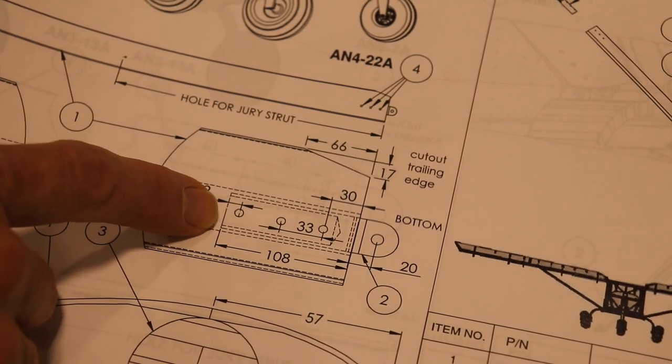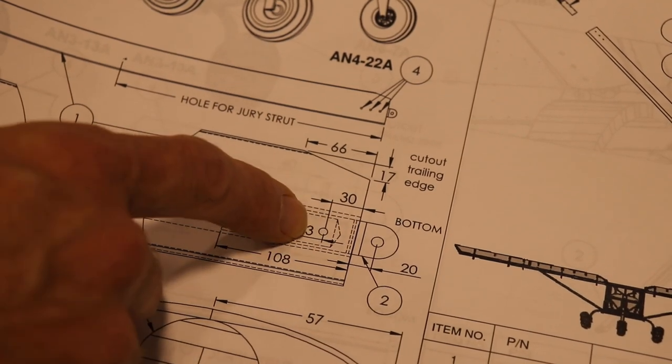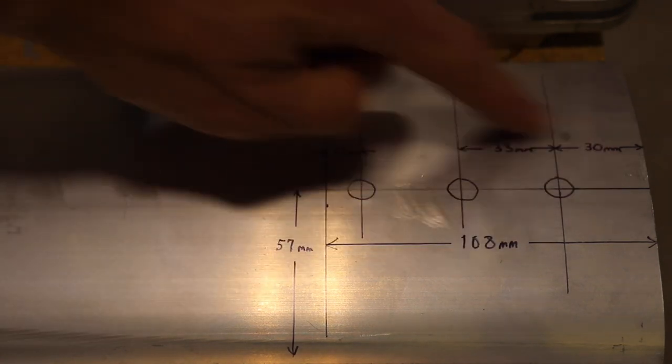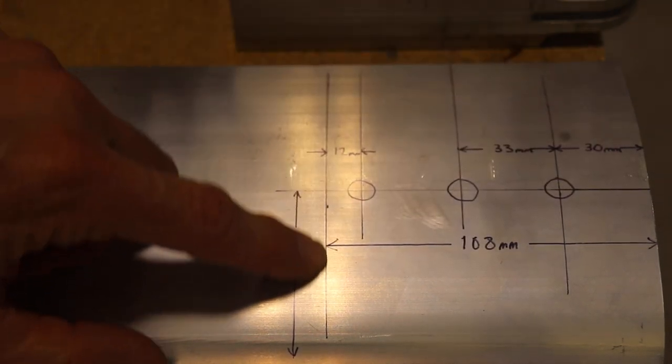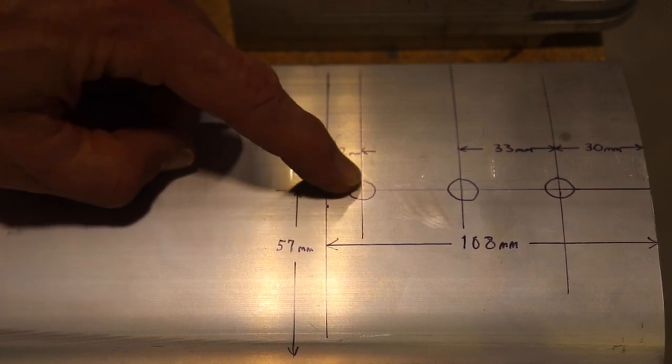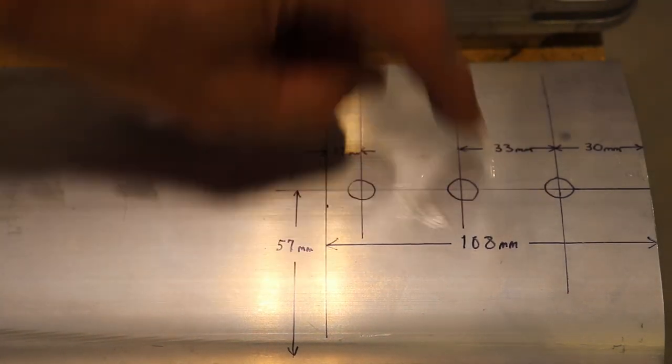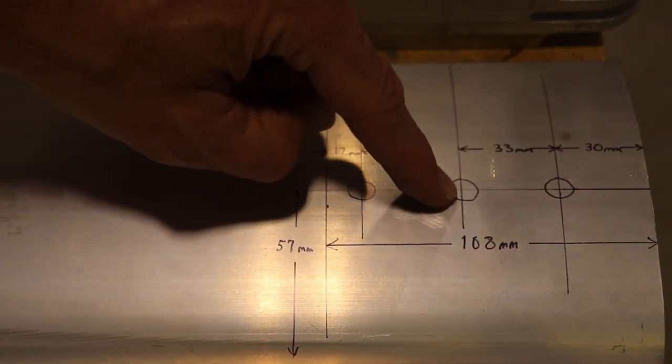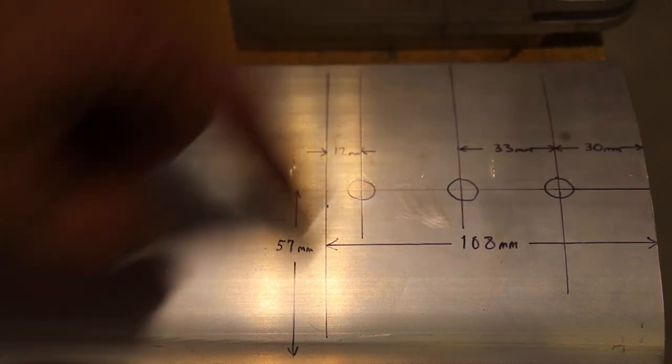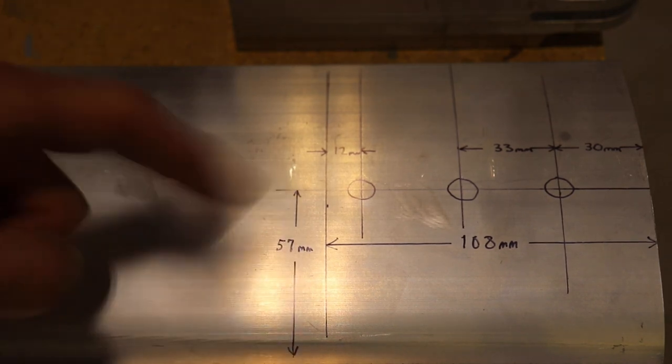This hole should be 12 millimeters from the end of the block. The first hole here should be 30 millimeters in, and you can see on my wing strut I have all of those measurements laid out. Here is 108 millimeters to the end of the block, 12 millimeters to this hole, 30 millimeters here to this hole and then 33 to this one. This center line where all the bolts are is 57 millimeters from the leading edge of the strut back.